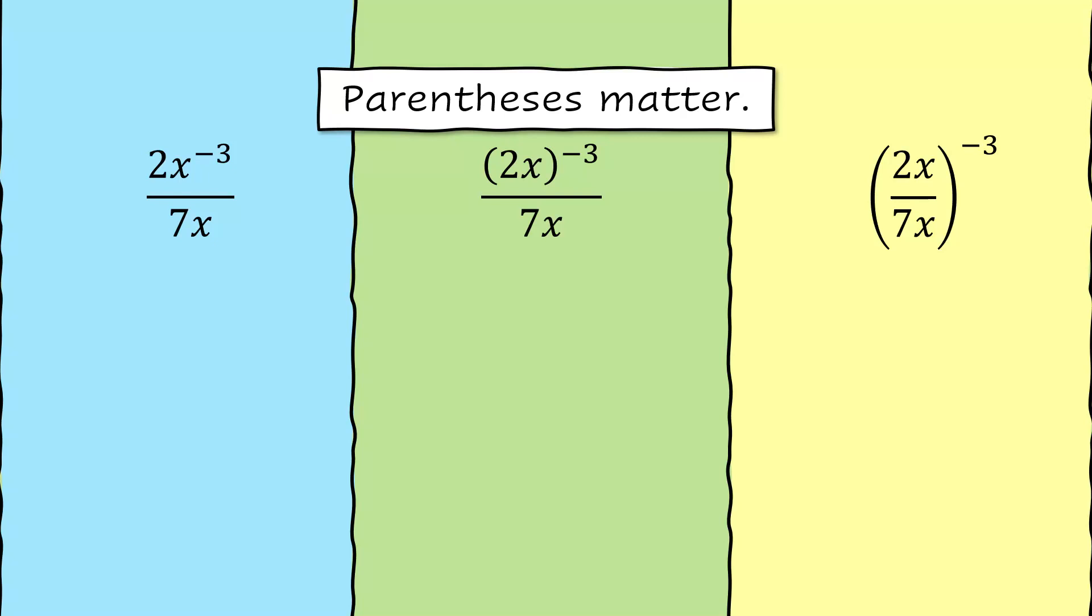In the first one we have no parentheses. So the exponent of negative 3 is only on the x in the numerator. That turns into 2 times 1 over x cubed, and all of that is being divided by 7x. Rewriting 7x over 1 is going to help us with some simplification here.